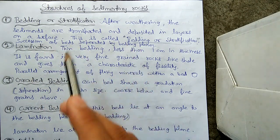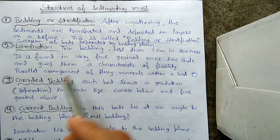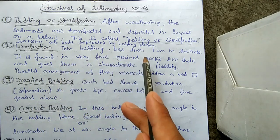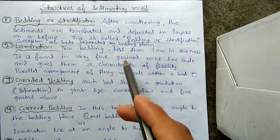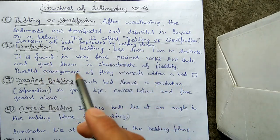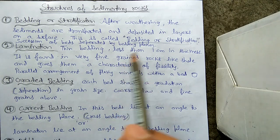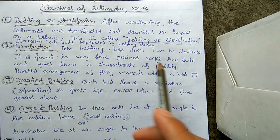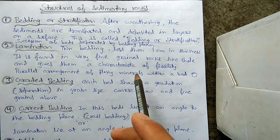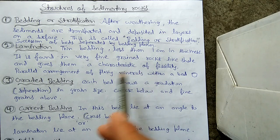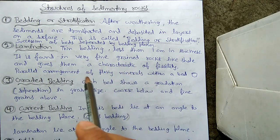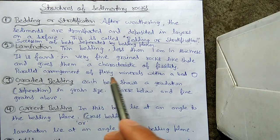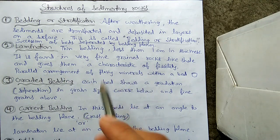The second structure is lamination. Lamination is a very thin bedding that is less than one centimeter in thickness. It is found in very fine-grained rocks like shale and gives them a characteristic of fissility. Fissility is a property due to which the surface of the rock is slippery. It also refers to the parallel arrangement of flaky minerals within a bed.